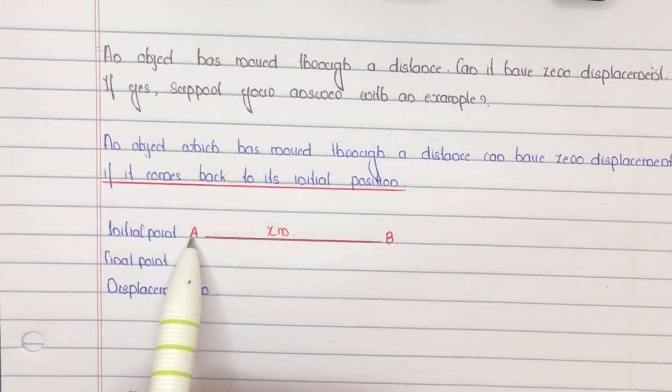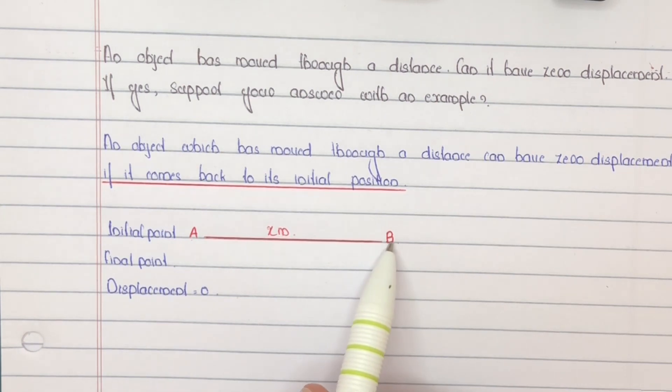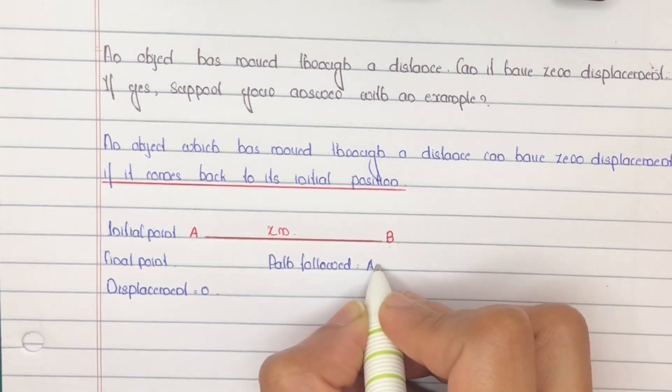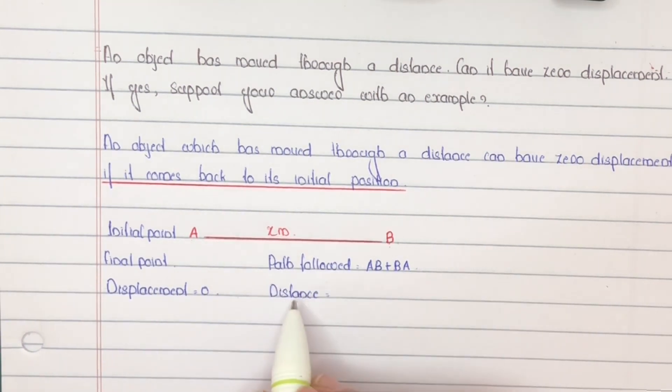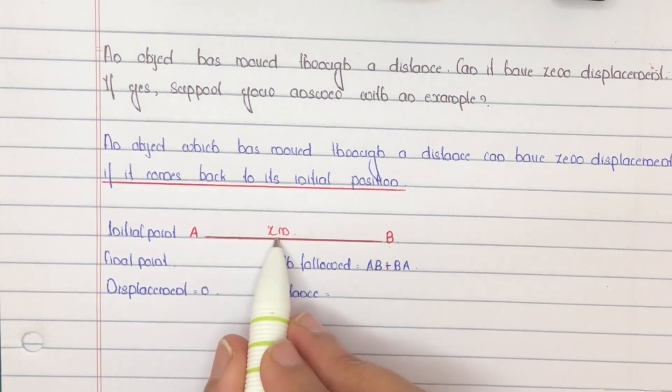Here, the path followed: starts at A, reaches at B, and then returns to A. That is, A to B and then B to A. So the distance traveled will be A to B, x meters.